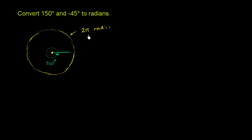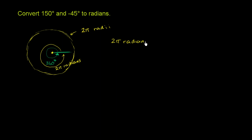You could say the length of the circumference is 2π radii. If you want the exact length, you just take the radius and multiply by 2π — that comes from the definition of π and the formula for the circumference of a circle. So if we go all the way around, this is also 2π radians. That tells us that 2π radians, as an angle measure, is the exact same thing as 360 degrees.